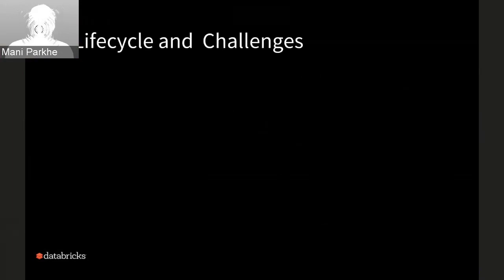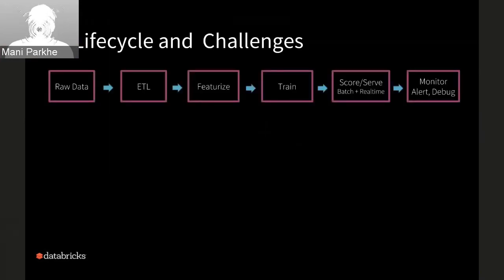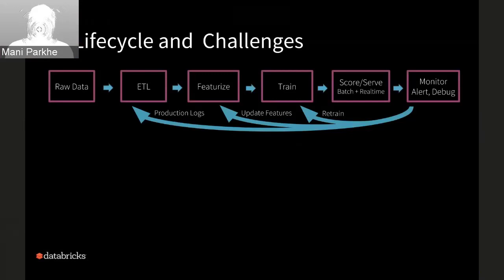Let's look at the machine learning lifecycle and how all of this presents challenges. A typical ML lifecycle starts with taking in raw logs, which are then ETL'd and cleansed, featurized into feature vectors, trained with different algorithms, served, and monitored. This looks simple, but it's not — because there are backward loops. After training, you might realize the feature vectors weren't perfect and need to go back, or retrain with another algorithm.